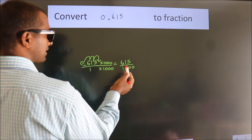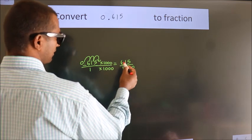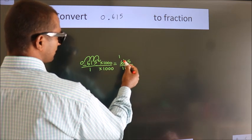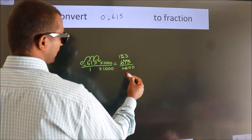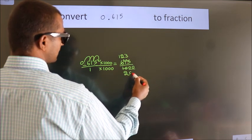Now cancel with 5. 5 ones, 5 twos, 5 threes. 5 twos, the zeros as it is down.